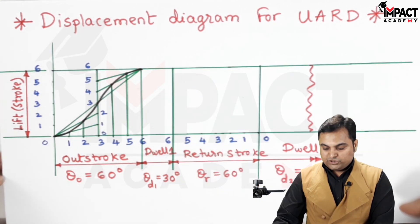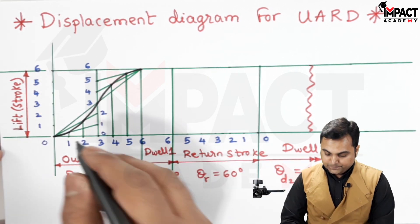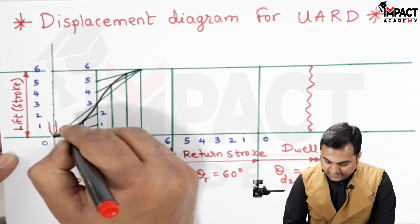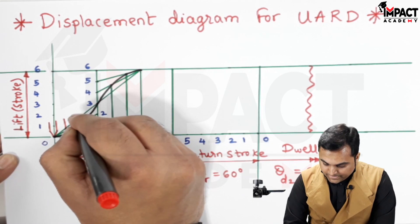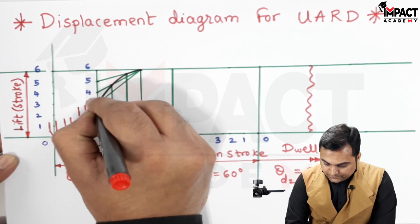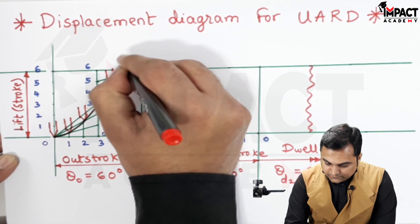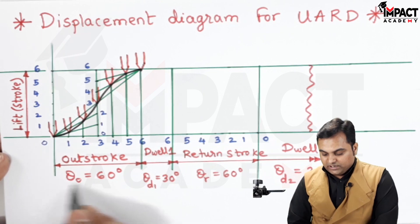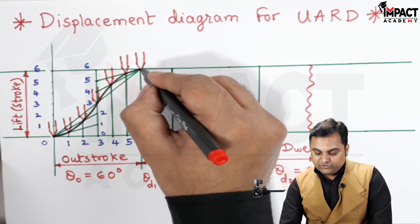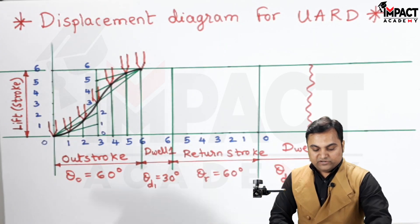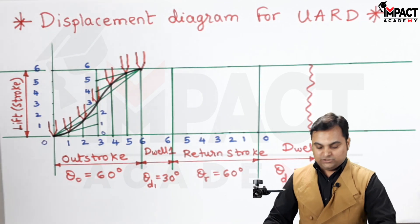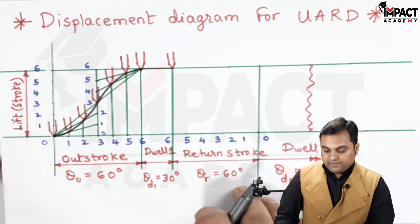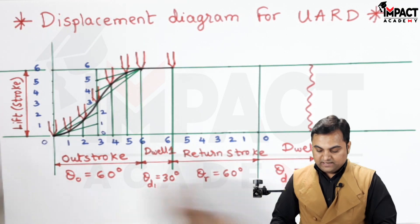To explain the motion, assuming a knife-edge follower: at first it is at the bottom position at 0, then with UARD it moves through points 1, 2, 3, 4, 5, and finally to the top at 6. In this way the follower moves during the outstroke — 60 degrees of cam rotation — reaching maximum lift. After that, it remains at that position for the remaining 30 degrees of cam rotation, which is the dwell.